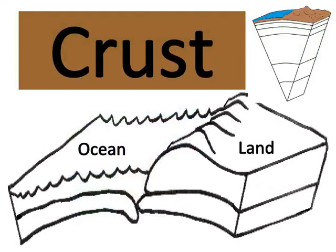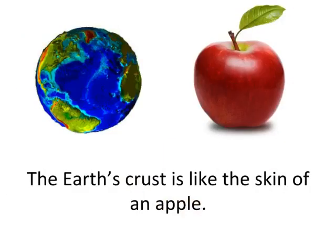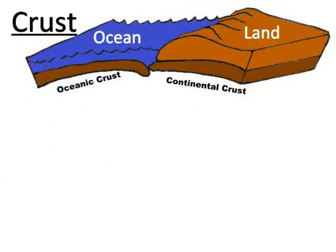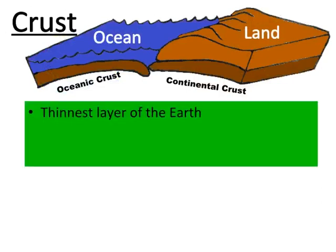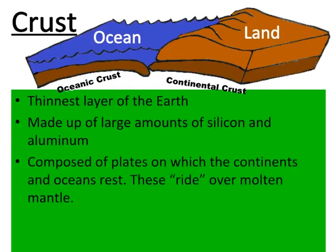Crust is further divided into two types: oceanic crust and continental crust. The Earth's crust is like the skin of an apple. In-depth teaching about the plates and their movement will occur in the next essential question. The crust is the thinnest layer of the Earth, made up of large amounts of silicon and aluminum, and composed of plates on which the continents and oceans rest. These plates ride over molten mantle.